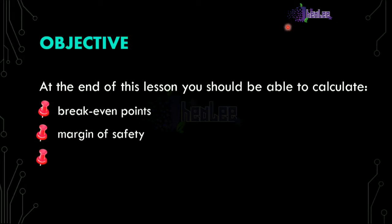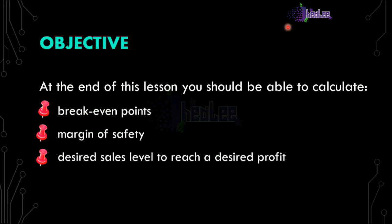Our next objective is to calculate the desired sales level to reach a desired profit. When we talk about desired profit, we're talking about targeted profit, or targeted net income, or target net profit analysis. This looks at the income objective firms set for individual product lines, and it indicates the sales necessary to achieve a specified level of income. We will be doing calculations for that.